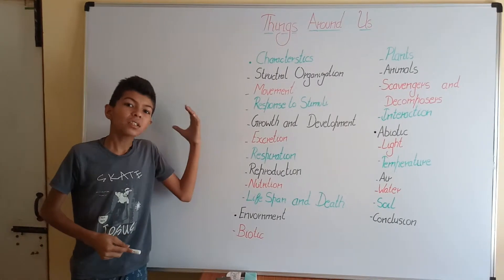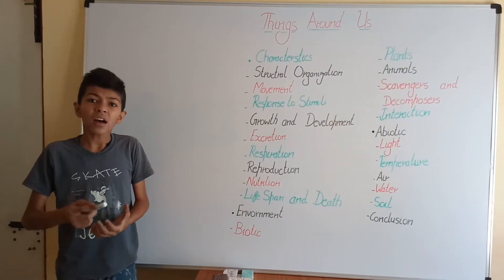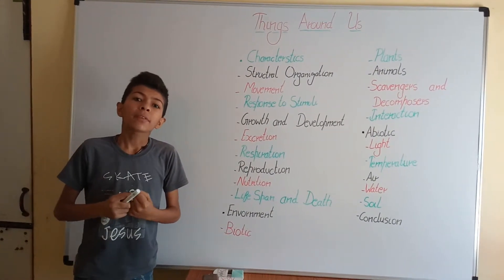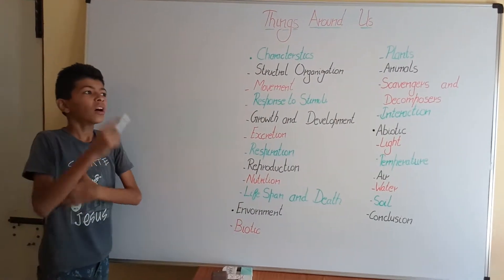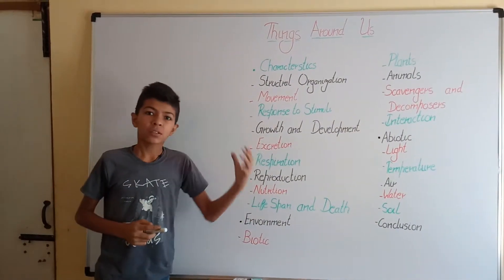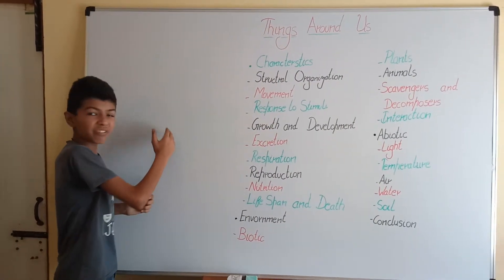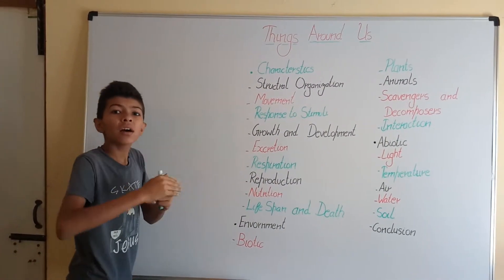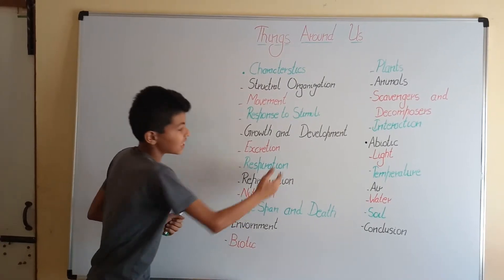Next we have excretion. Living things get rid of waste using this process. If we do not get rid of our waste, these wastes can produce toxic substances in our body and damage our organs or organ systems. Trees also perform excretion — for example, they give out oxygen, which is a byproduct of their food-making process.